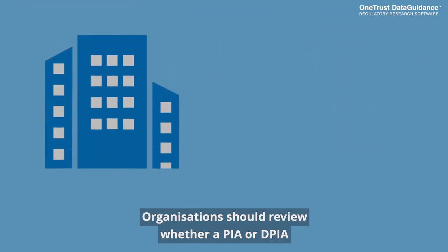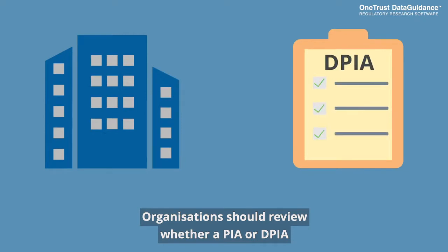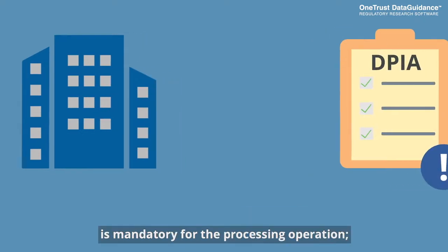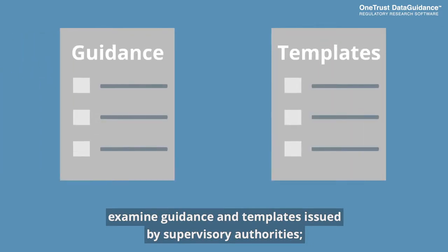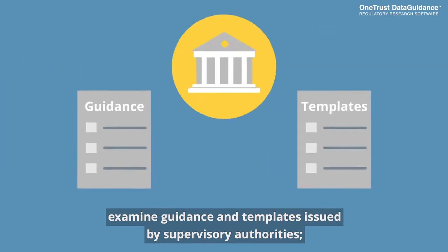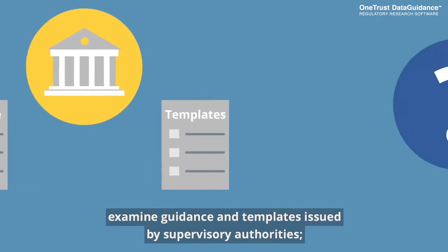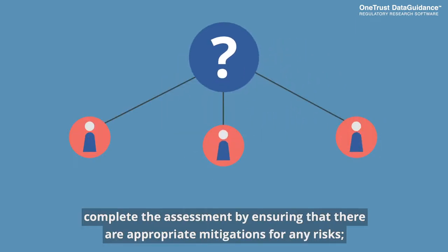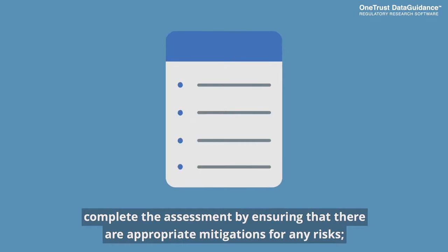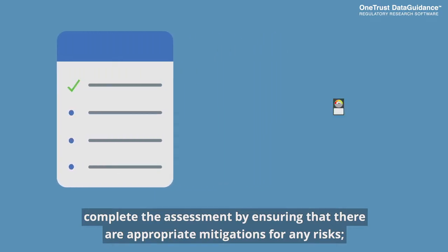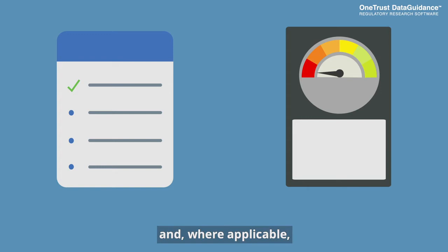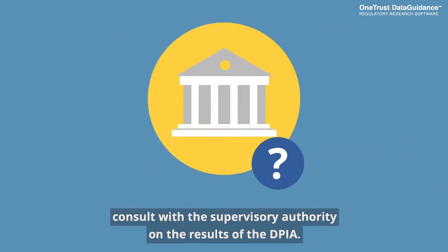Organizations should review whether a PIA or DPIA is mandatory for the processing operation, examine guidance and templates issued by supervisory authorities, consult with any relevant stakeholders, complete the assessment by ensuring that there are appropriate mitigations for any risks, and, where applicable, consult with a supervisory authority reporting on the results of the DPIA.